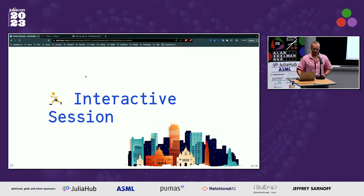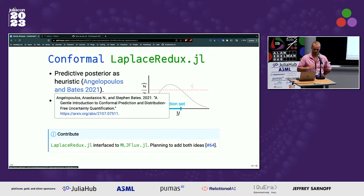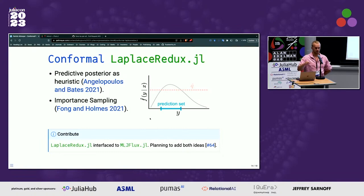The answer I got from Anastasios Angelopoulos was encouraging: this shouldn't be disappointing, because we can use our Bayesian predictive posterior as a heuristic non-conformity score. Earlier I said use one minus softmax — if we have a better heuristic of predictive uncertainty, let's use that instead. I'm working on interfacing Laplace Redux to MLJ-Flux, which should make that package compatible with conformal prediction, conforming the predictive density rather than one minus softmax.